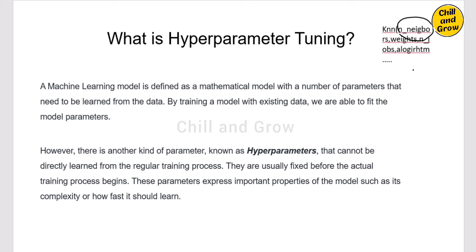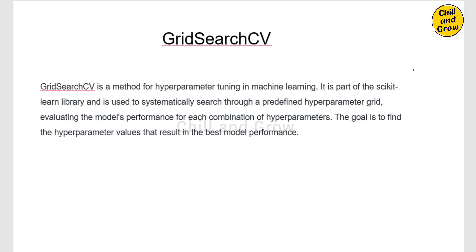So if you look at the best hyperparameter values, we will choose the best hyperparameter. What is the best hyperparameter value? We will take the model. There is a method called Grid Search CV — Grid Search Cross Validation. If you look at Grid Search CV, this is a type of hyperparameter tuning. There is a predefined hyperparameter grid. This method uses a predefined hyperparameter grid.